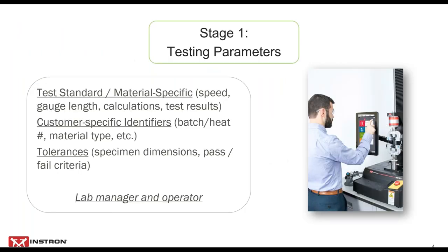Stage one is testing parameters. This involves things like high-level setup of test methods to ensure compliance with international or company standards, and also the daily tasks of choosing the appropriate test method or entering specimen information like batch identifiers, lot numbers, and tolerances into the software. This typically involves both lab managers and operators.